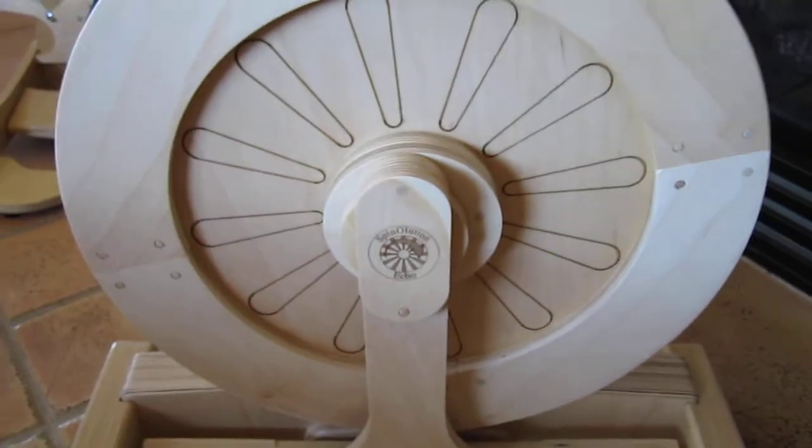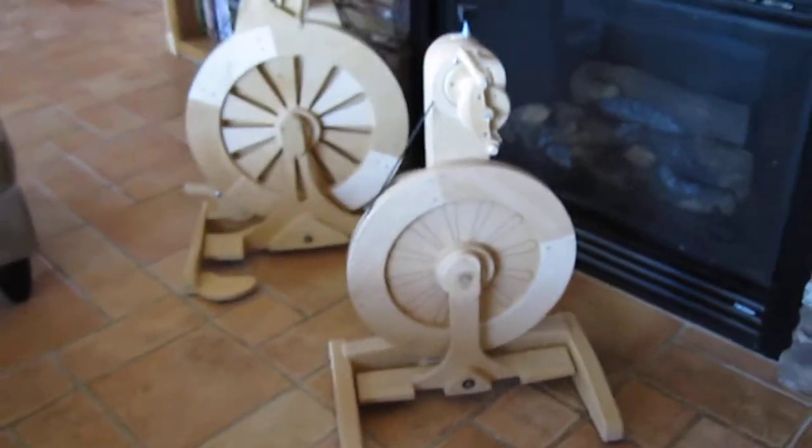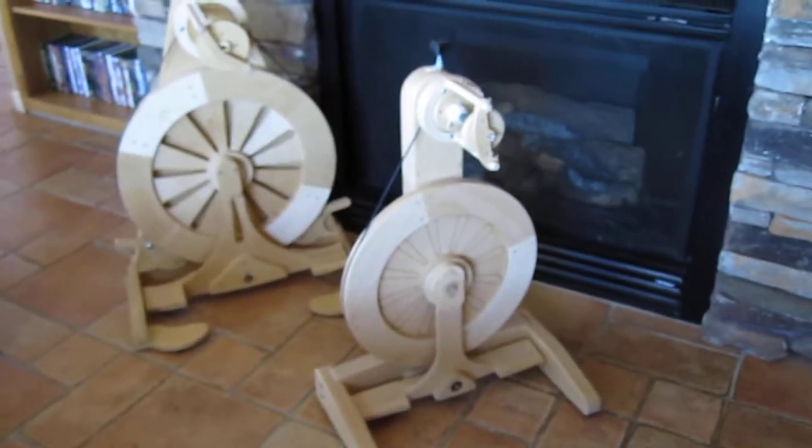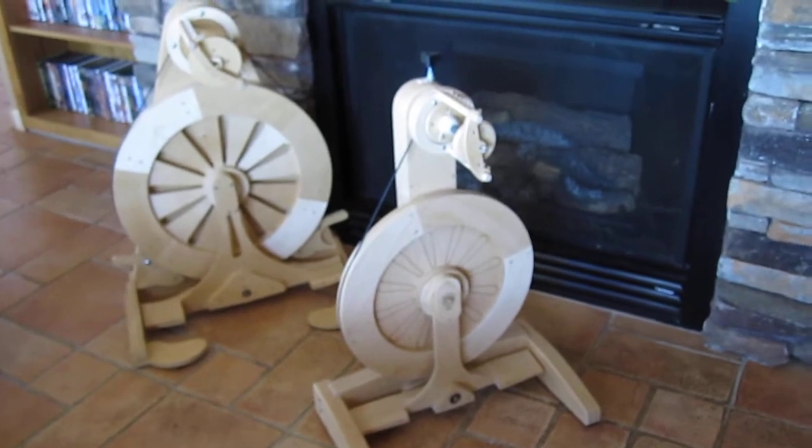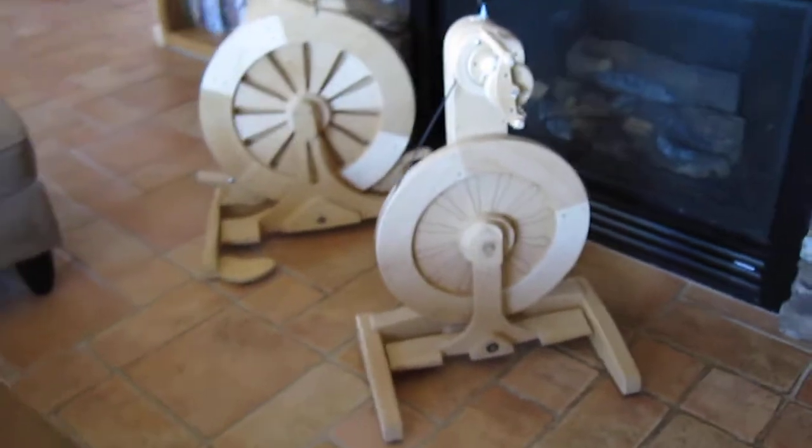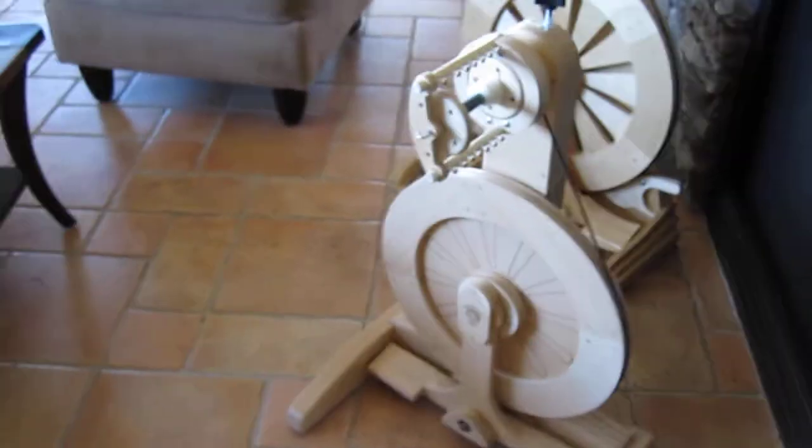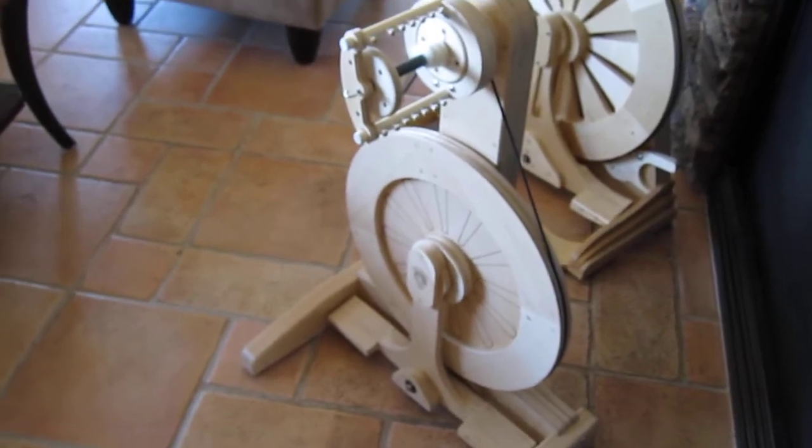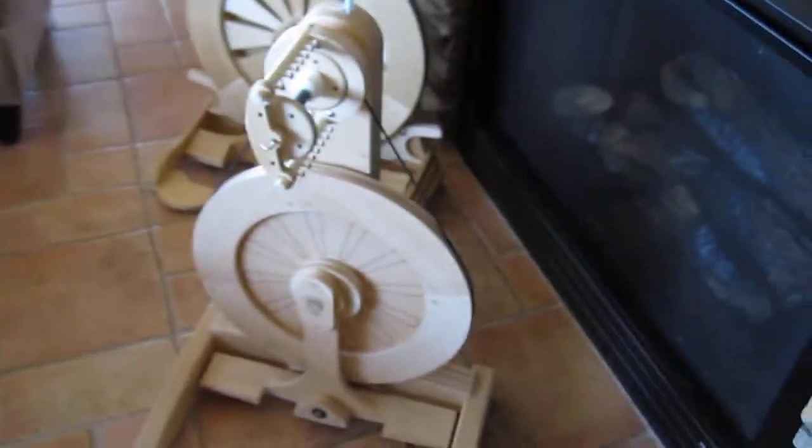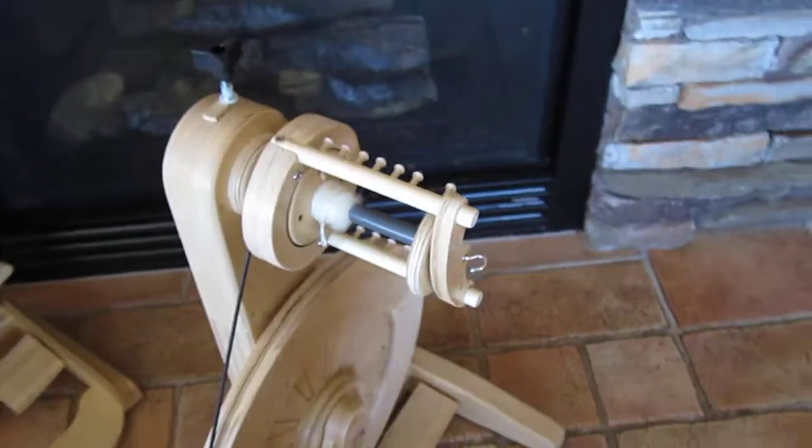Introducing the new ECHO spinning wheel from Spinolution. This is our entry-level spinning wheel with the Mach 2 wheel sitting behind it. The ECHO represents the advancements in spinning wheels that Spinolution has developed over the last 2 years and the 25 years previous to that.